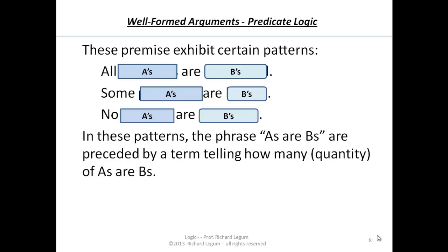In these patterns, we have the phrases A's and B's. They're preceded by a term telling us how many - how many A's are B's. In the first one, all of them. How many in the second one? Some of them. How many in the third? None. So notice they're telling us something about the quantity of A's and B's.